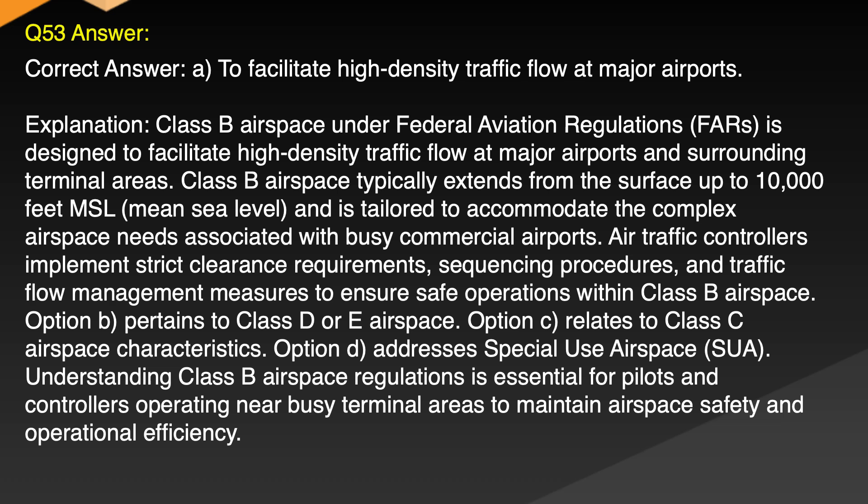Explanation: Class B airspace under Federal Aviation Regulations, FARs, is designed to facilitate high density traffic flow at major airports and surrounding terminal areas. Class B airspace typically extends from the surface up to 10,000 feet MSL, mean sea level, and is tailored to accommodate the complex airspace needs associated with busy commercial airports. Air traffic controllers implement strict clearance requirements, sequencing procedures and traffic flow management measures to ensure safe operations within Class B airspace. Option B pertains to Class D or E airspace. Option C relates to Class C airspace characteristics. Option D addresses special use airspace. Understanding Class B airspace regulations is essential for pilots and controllers operating near busy terminal areas.